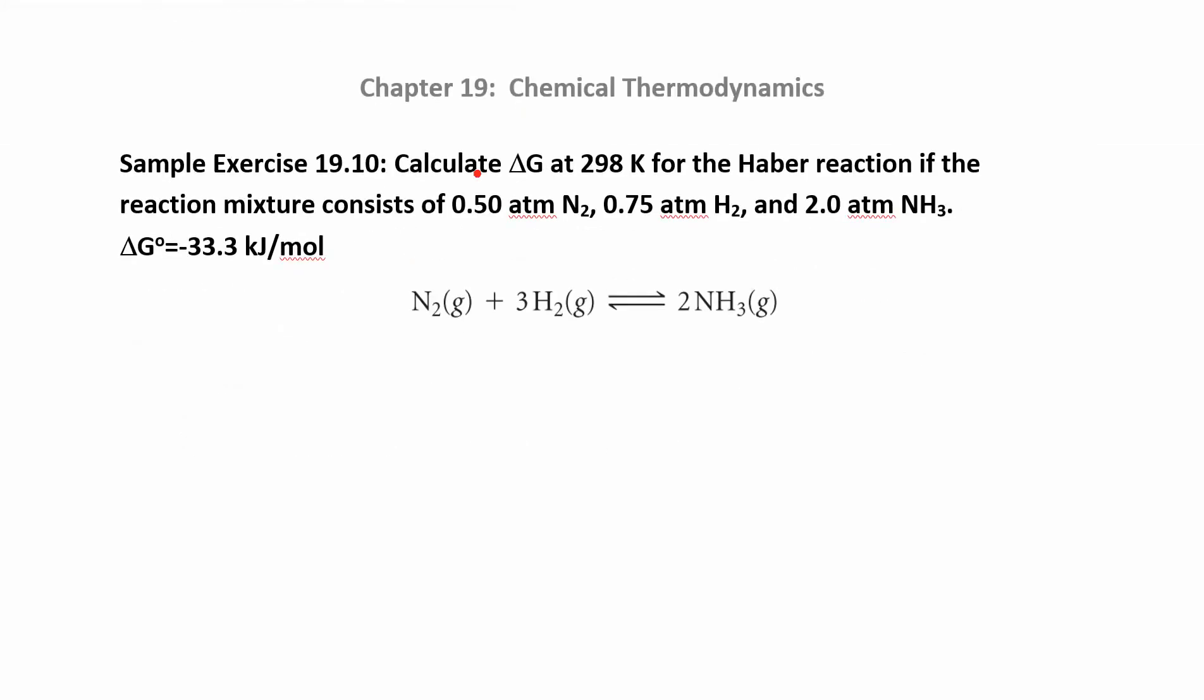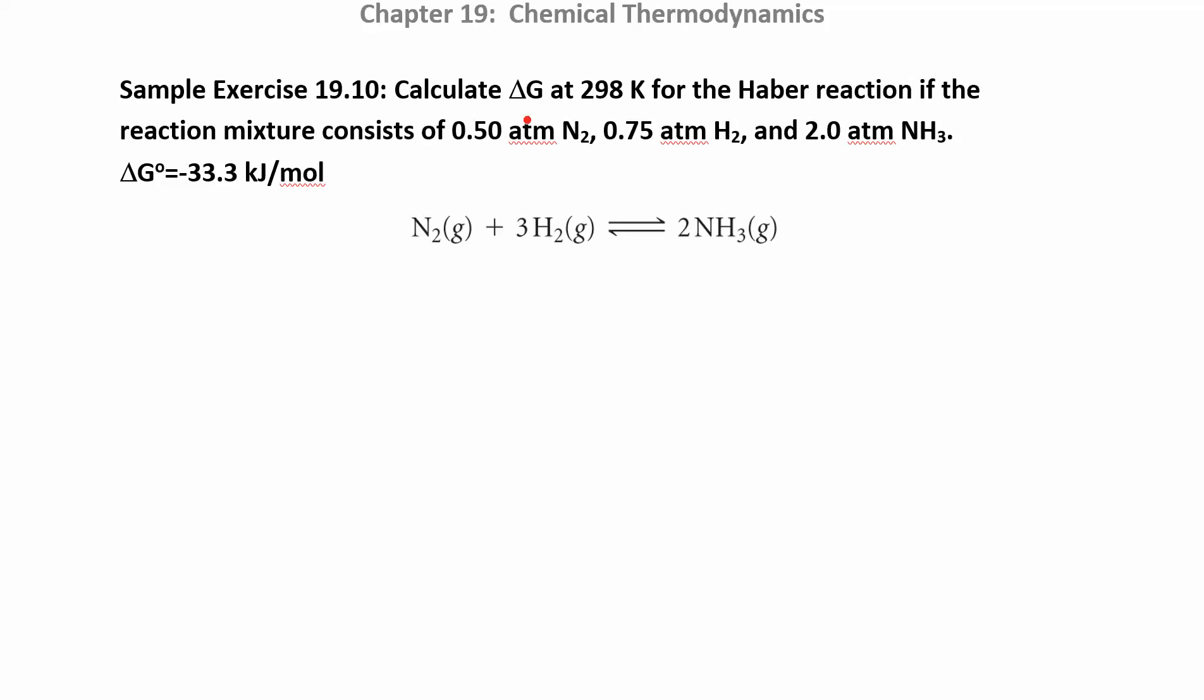Let's try to use that equation in a sample exercise here. In this problem they want to calculate delta G. Notice the difference between delta G and delta G naught. This little superscript naught means you're under standard conditions. This means you're under non-standard conditions. We have all these gases and they're not at one atmospheric pressure. They're different pressures. So in order to find delta G, we need to use the equation that we had above.